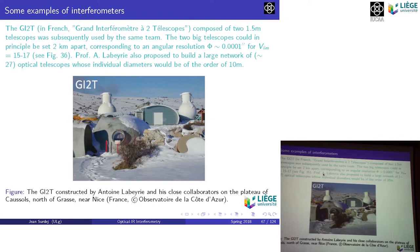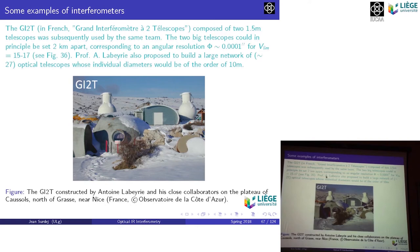After the small I2T interferometer, Anton Laberie built the GI2T — the Grand Interferometer with Two Telescopes — composed of two 1.5-meter telescopes that could in principle be set two kilometers apart, corresponding to a resolution of one-tenth of a milli-arcsecond, down to a limiting magnitude of 15 to 17. This was in the early 1980s. Laberie then proposed making a bigger network with larger telescopes, and this is how the VLTI came about — it was thanks to his pioneering work. He did this essentially alone with a few graduate students and one or two postdocs — truly heroic work.